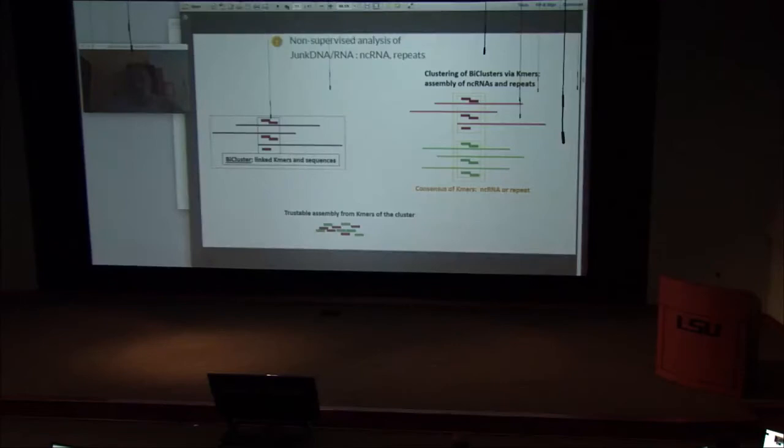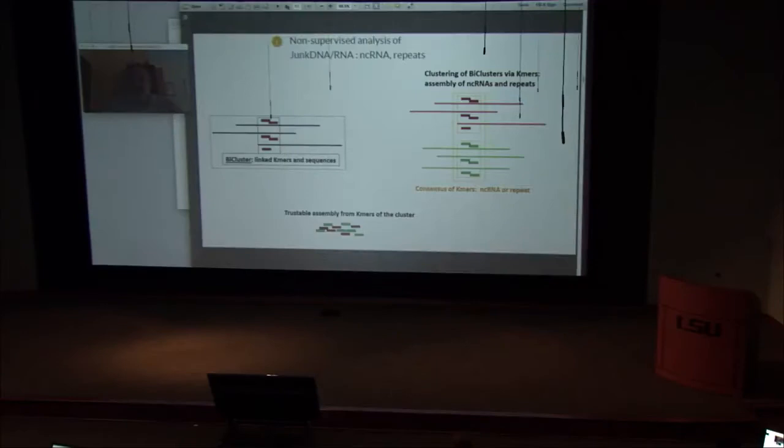Inside each cluster, these k-mers are assembled, and this assembly is a consensus of a repeat or whatever element is present. The assembly result using pre-filtered k-mers is a consensus sequence for each identified repeat.